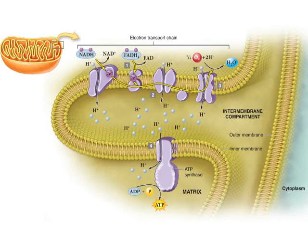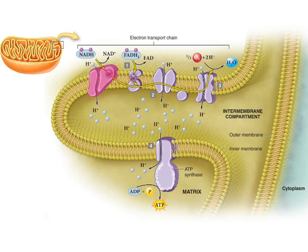The electron transport chain is a series of four proteins embedded in the inner mitochondrial membrane. So let's start our tour of the electron transport chain with the first membrane protein.